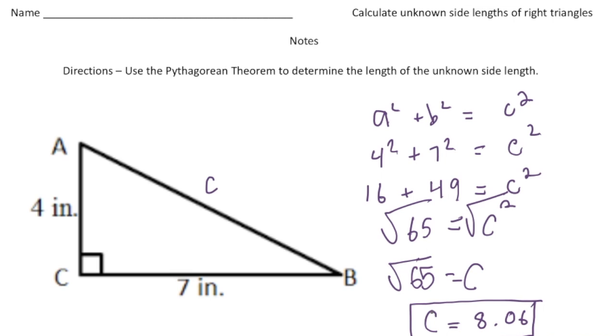So to use the Pythagorean theorem all you have to do is write down the theorem, plug in the sides that you know, and then solve for the unknown. So why don't you pause the video and try the your turn problem now. And when you're done hit play and you can see how you did. Good luck.